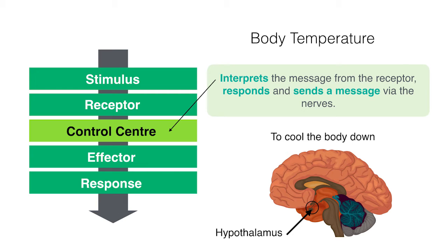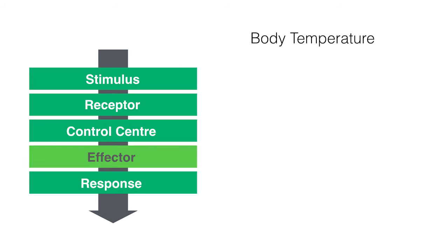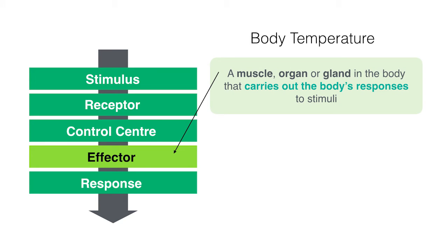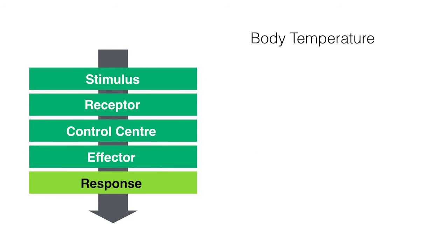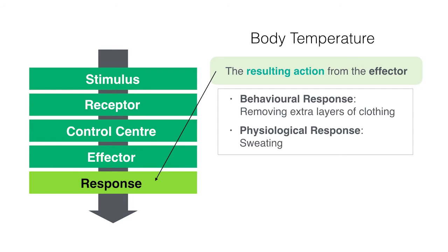Once the brain interprets the receptor's message, it does something to counteract any changes. These counteractions are undertaken via the effector, which is a muscle, organ, or gland in the body that carries out the body's response to stimuli. So, say your body temperature is too high — the effector will send out a behavioral response telling you to strip and a physiological response telling you to sweat. The response is the resulting action from the effector. This is the stage when you strip and sweat. When sweat evaporates from your skin, it takes away all that excess heat.